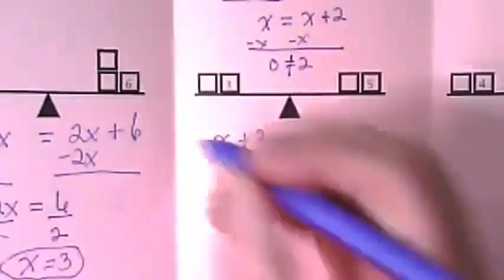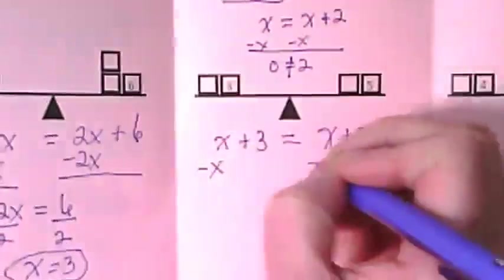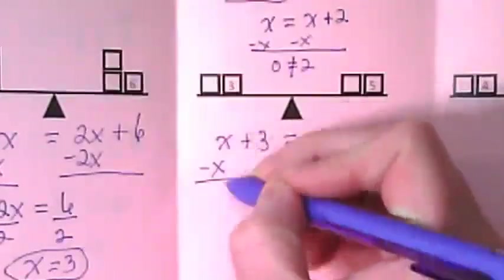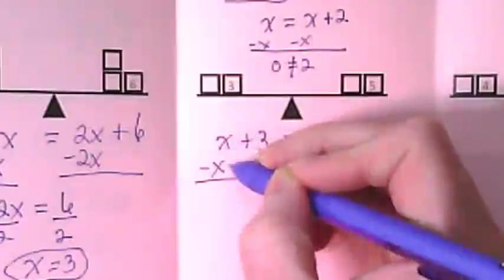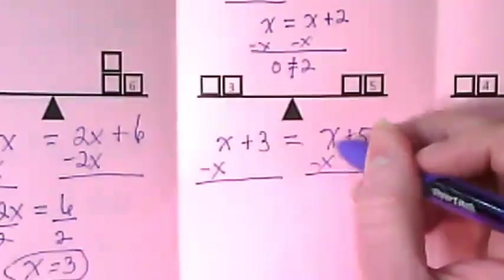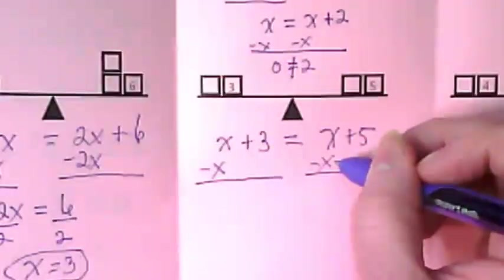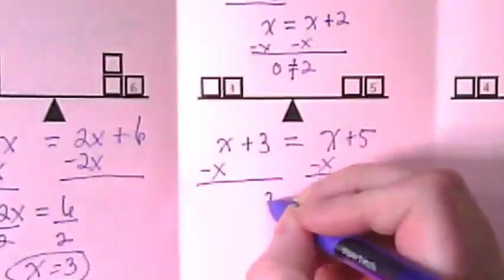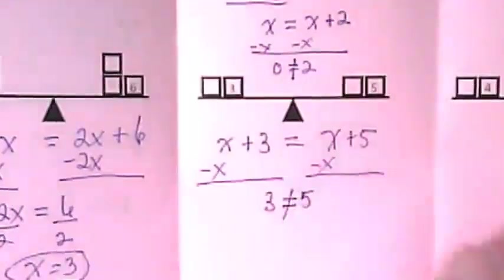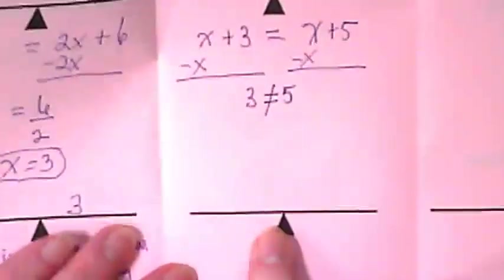The other way I could have solved this is I could have just zeroed out the X to begin with. If I'm trying to zero out this X, I have to subtract it from both sides. That's also going to zero out this X, isn't it? And what does it leave us with? 3 equals 5. Does that work? No. No.